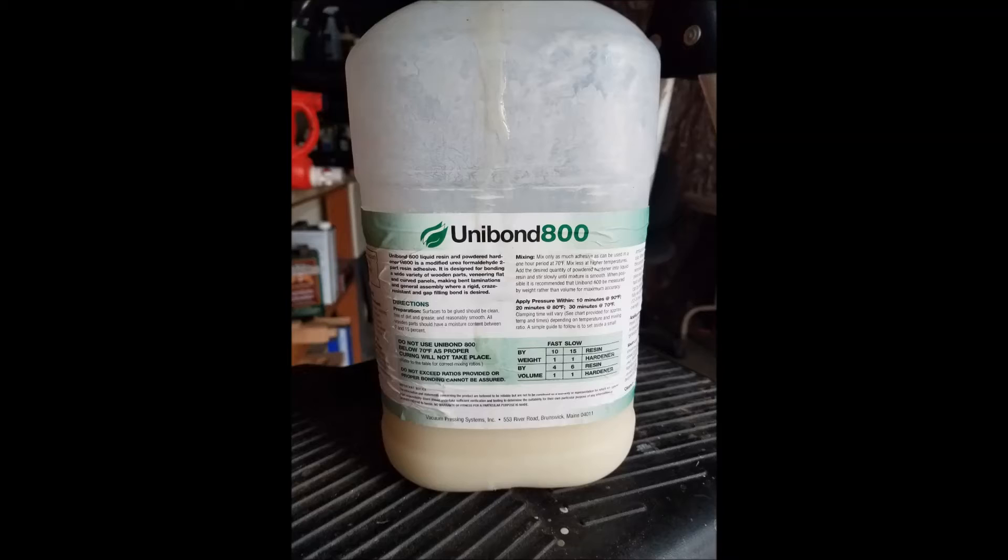Veneers with regular glues like white glue, yellow glue, can shift a little bit over time, which can reveal some seams. But this glue is extremely rigid and doesn't allow that shifting. On a negative standpoint, you do need to heat it to get it to set reasonably rapidly, as we'll see. And then it is somewhat toxic, certainly more toxic than regular glues. So you do want to wear a mask. But once it's dried, it's not toxic anymore.